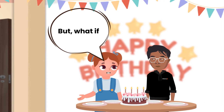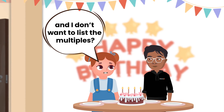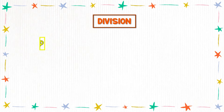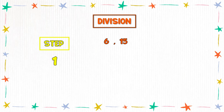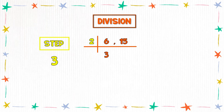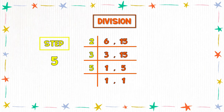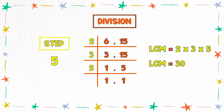But what if the numbers are really big and I don't want to list the multiples? In that case, go for the division method. Step 1: write the numbers separated by a comma. Step 2: divide both numbers by the smallest prime number. Step 3: if any number is not divisible, rewrite it and proceed further. Step 4: continue dividing the row of numbers by prime numbers until you're left with 1s in the complete row. Step 5: the LCM is equal to the product of all the prime numbers obtained by the division method.